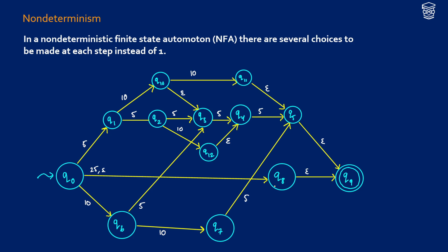These little epsilon symbols — empty strings — say that without reading any input you can go to the next state and see what happens. For example, from q0 we take 5 and go to q1, then take 10 and go to q10. We can either stay on that path or take the empty string down to q3. Also, not every node needs all possible transitions — if you look at q6, only 5 and 10 come out of it. If it gets 25, that branch just fails.